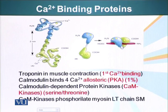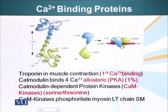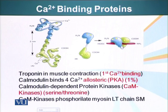One of the things it does is it can activate an enzyme or class of enzymes called calmodulin-dependent protein kinases, or cam kinases. These kinases, as the name suggests, add a phosphate group to the substrate proteins, specifically to serine and threonine residues inside the protein molecule. Cam kinases also phosphorylate the light chain of myosin in smooth muscle cells, which also causes contraction.